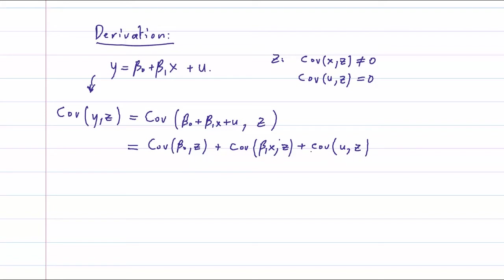By definition or by assumption, we have covariance between u and z is zero. The covariance between the constant and the random variable is also zero.